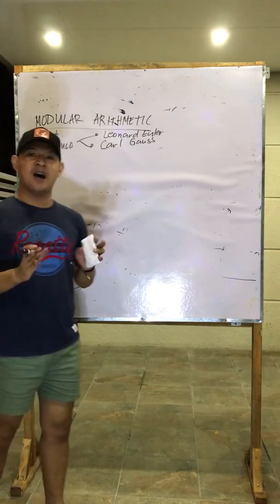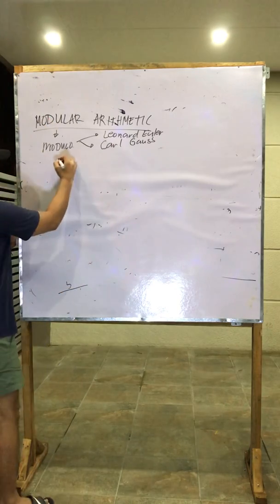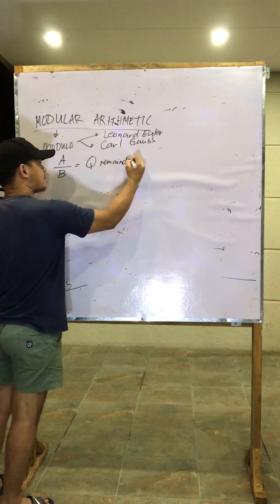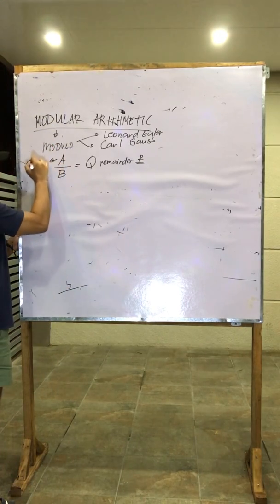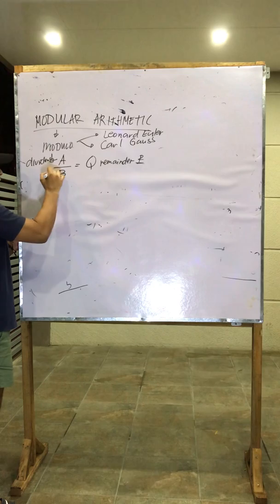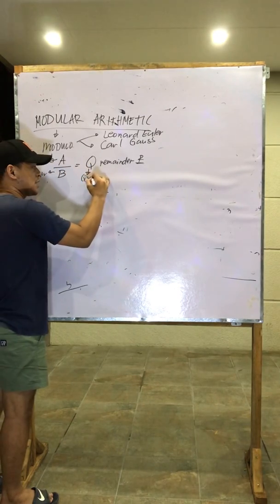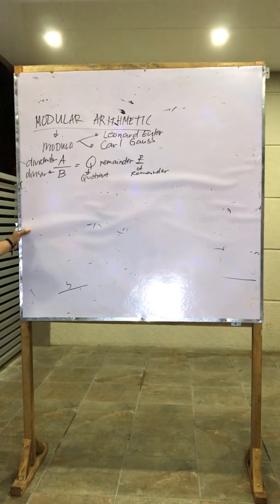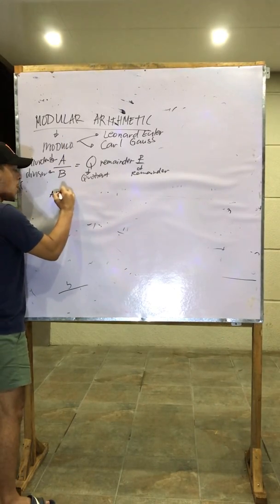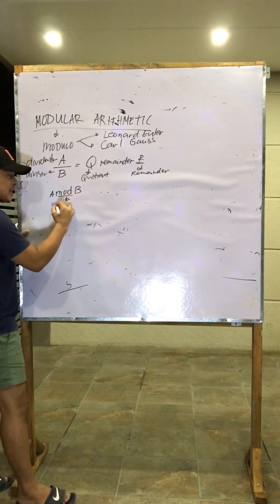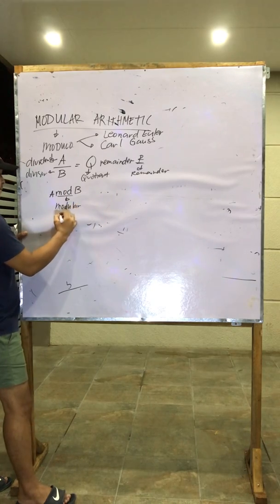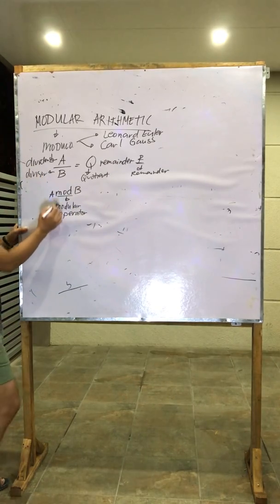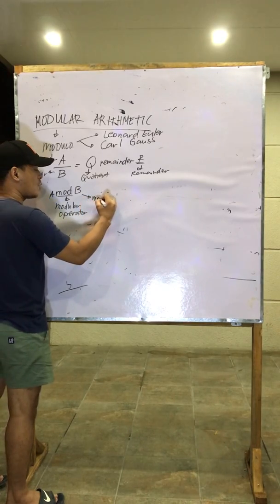Modular arithmetic is something related to the operation of division. In division, A divided by B is equal to quotient Q, remainder R — the excess. A is the dividend, B is the divisor, Q is the quotient, and R is the remainder. For the idea of modular arithmetic, we have A mod B, where mod is the modular operator. A is our dividend, and B is our divisor — or what we now call the modulus.